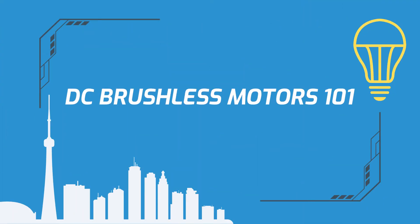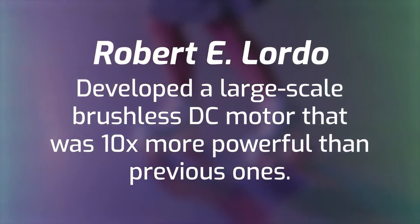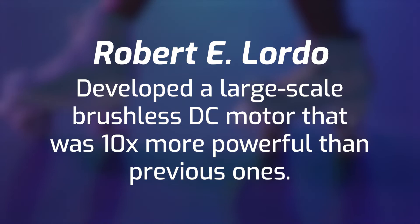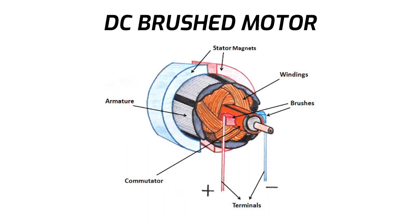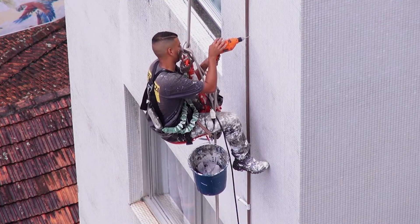DC brushless motors really started to gain traction in the 1980s when Robert E. Lordo developed a large-scale brushless DC motor that was 10 times more powerful than previous brushless DC motors. DC brushless motors are more efficient than any type of AC motor because they don't suffer from reactive power losses. They are also up to 25% more efficient than DC brushed motors because they don't suffer from power losses caused by brushes and a commutator rubbing against each other, which causes friction and energy loss in the form of heat. For power tools, this increased efficiency means battery life is going to be much longer, so you can get much more done between charges.